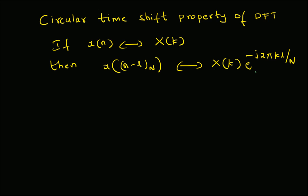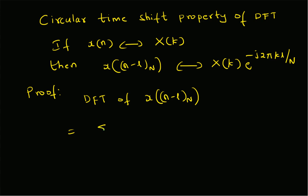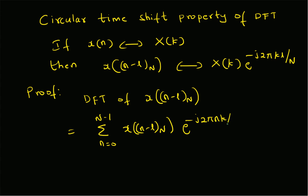So let us verify this theorem. The DFT of the circular shifted sequence, DFT of x of n minus l mod N, is by definition equal to summation n equal to 0 to N minus 1 of x of n minus l mod N times e power minus j 2 pi n k over capital N. Now the main thing we have to worry about is what is the value of n minus l mod N.